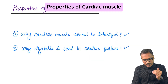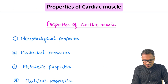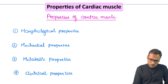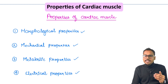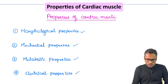There is a proper mechanism by which digitalis acts. When this question is asked, especially in MBBS exams, you have to write under specific headings: the morphological properties, mechanical properties, metabolic properties, and electrical properties. The action potential can also be written under the electrical properties heading, and I will discuss the action potential in the next video.